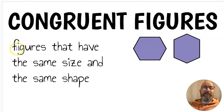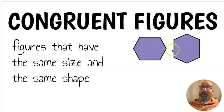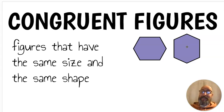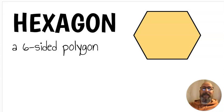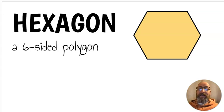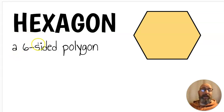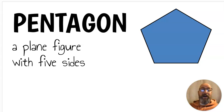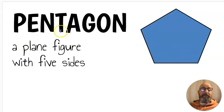Next we have congruent figures — figures that have the same size and same shape. Here we have two hexagons; they're the same size and same shape, they just look different because one has been turned, but they're still congruent. A hexagon is a six-sided polygon — hexa means six. A pentagon is a plane figure with five sides — penta means five.